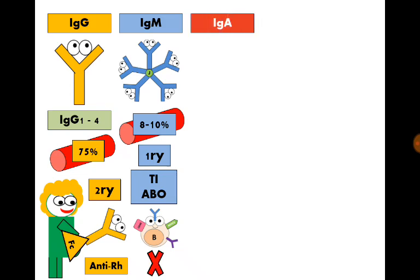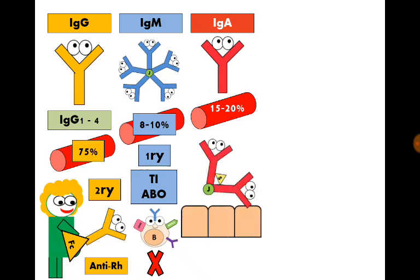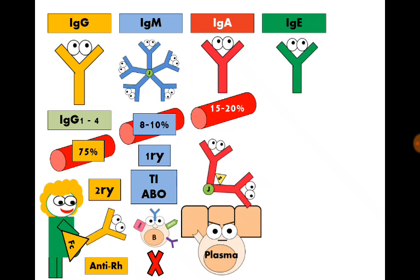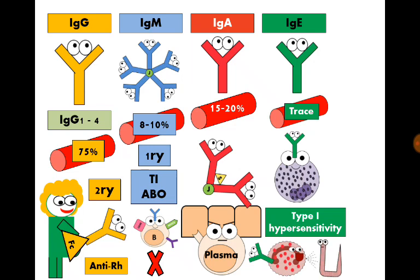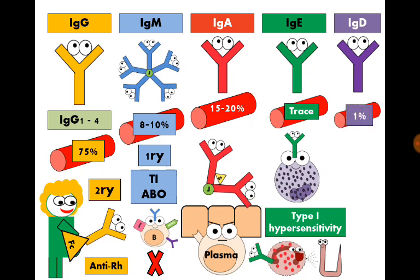The next class is immunoglobulin A that has two forms: a monomer forming about 15% of circulating immunoglobulins and a dimer responsible for mucosal immunity secreted by plasma cells in the submucosa of GIT or respiratory tract mucosa. Immunoglobulin E is a monomer present in serum in trace amounts. It is responsible for activating basophils and causing type 1 hypersensitivity reaction and activating eosinophils against helminths. Lastly, we have immunoglobulin D whose main function is acting as B cell receptor and present in low amounts in serum.